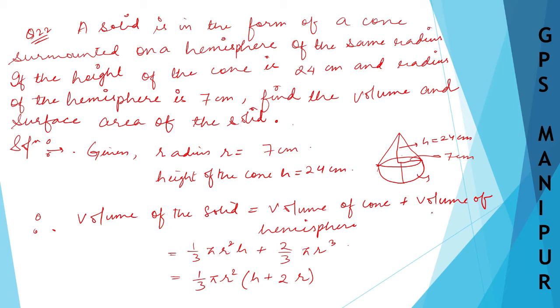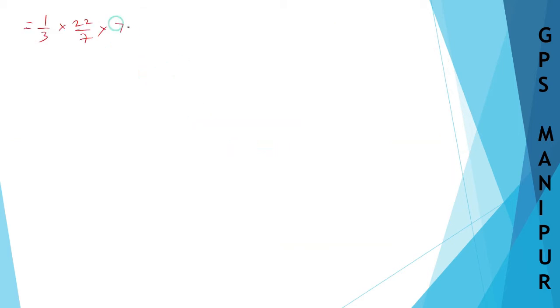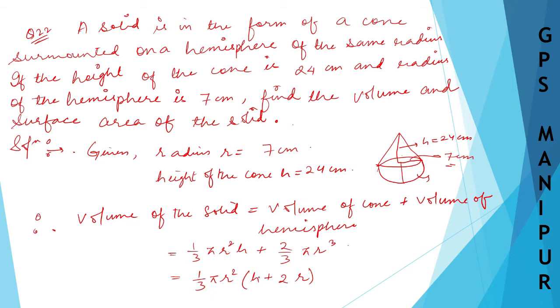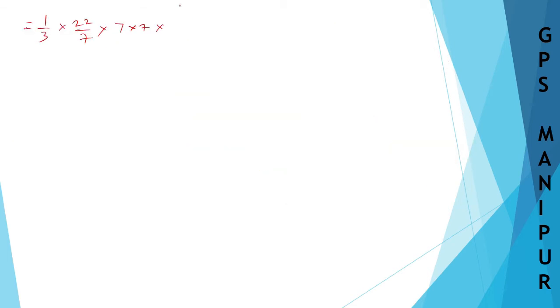Which will be equal to 1/3 times π, that is 22/7, times R², which is 7², so 7 times 7, times H plus 2R. H is 24 and 2R is 7 times 2, so 24 plus 2 times 7.